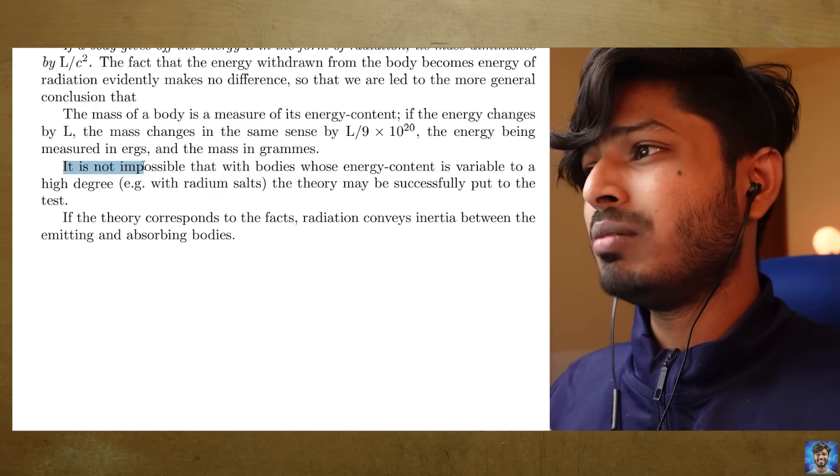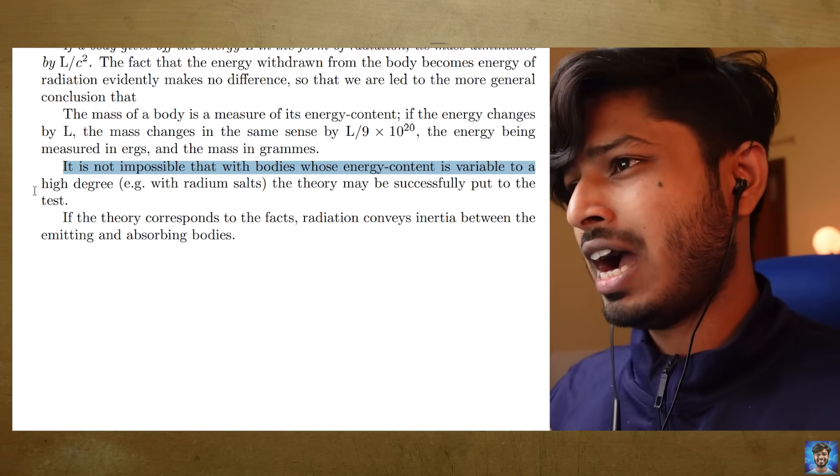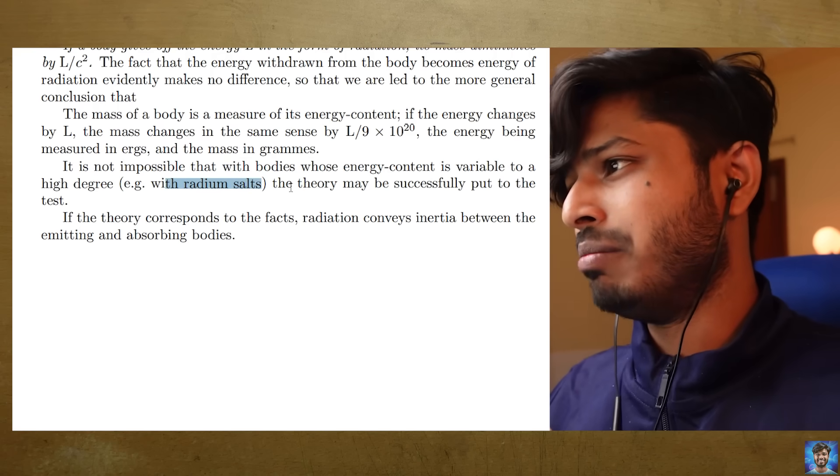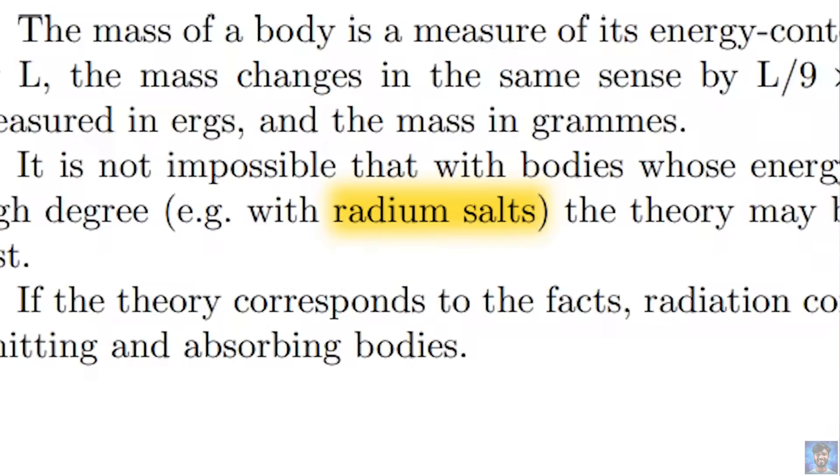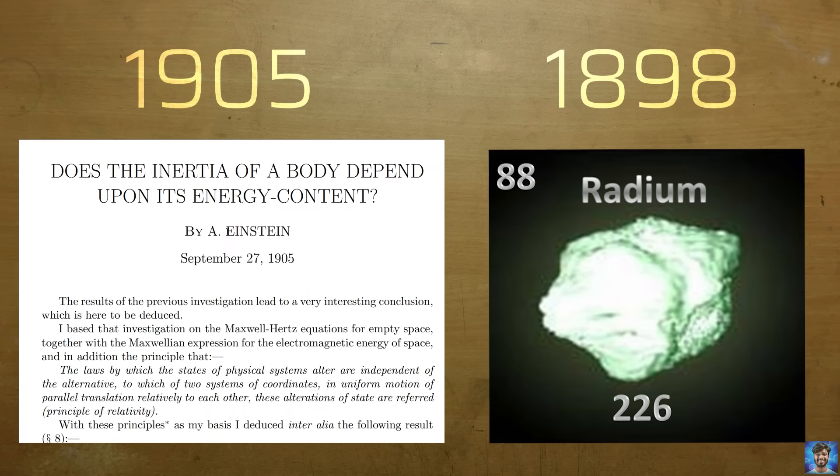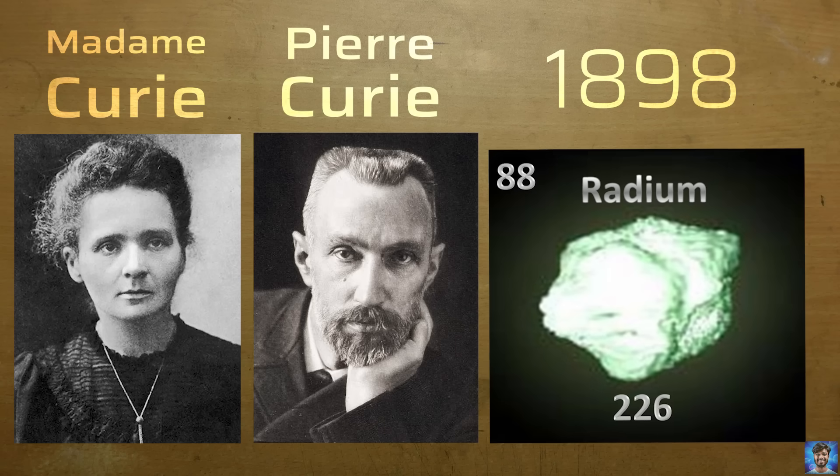When Einstein proposed this idea, it was a crazy idea back then. It was just a hypothesis. Einstein himself wrote: 'It is not impossible that with bodies whose energy content is variable to a high degree, such as radium salts, the theory may be successfully put to the test.' Radium was a very recently discovered element at the time of the paper's publication, highly radioactive, which is why Einstein suggested it.